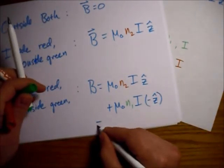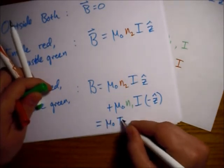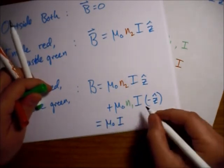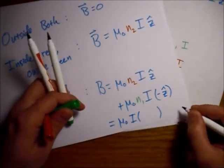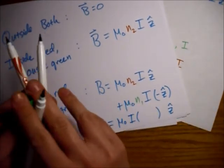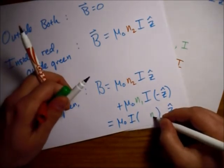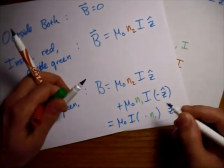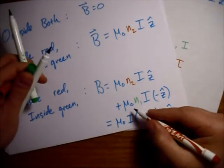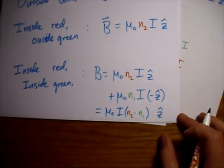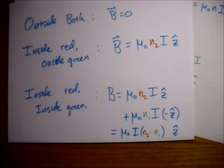So this can be written out, if we bring out the mu naught and the I, as just n2 minus n1. So here is the magnetic field for the space in the very middle inside both of our solenoids. It's still uniform; it's just the sum of both of them.